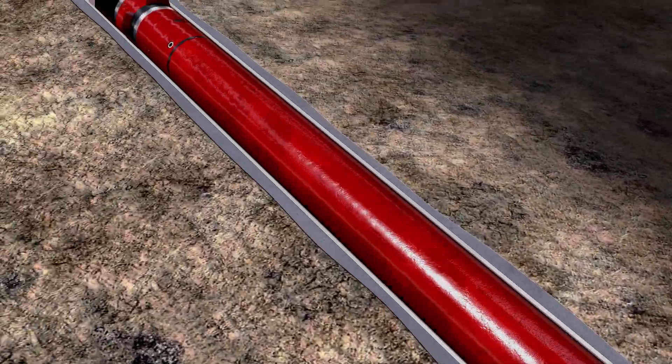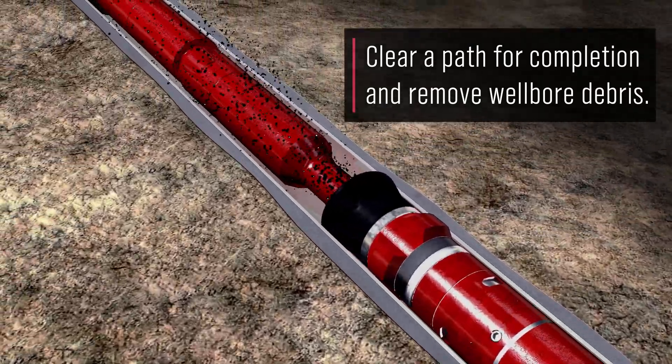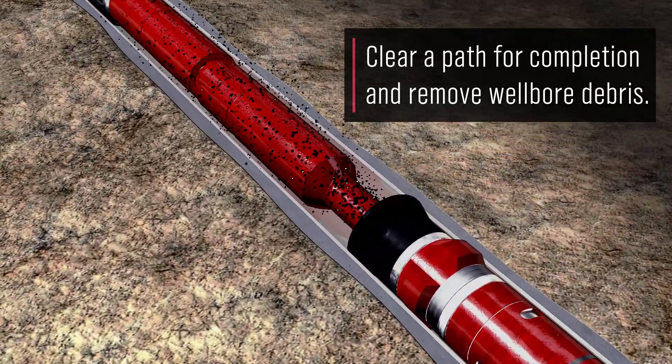The string is pulled out of hole and wellbore fluids flow through the debris catchment area, where it is recovered at surface. The well is now ready for completion.